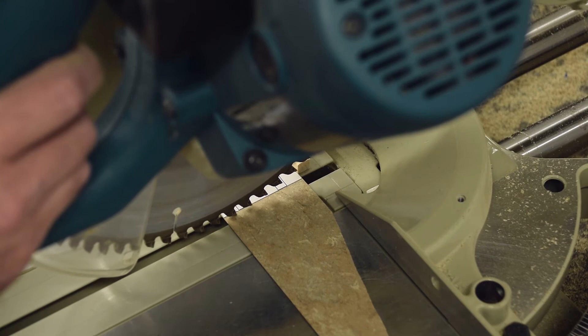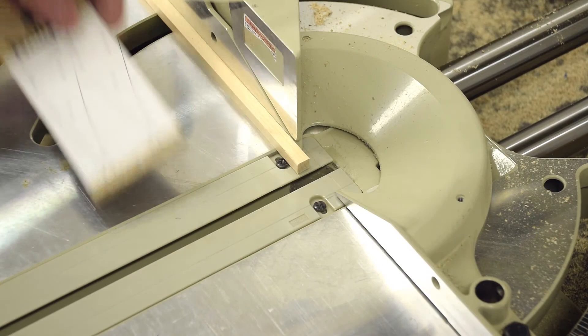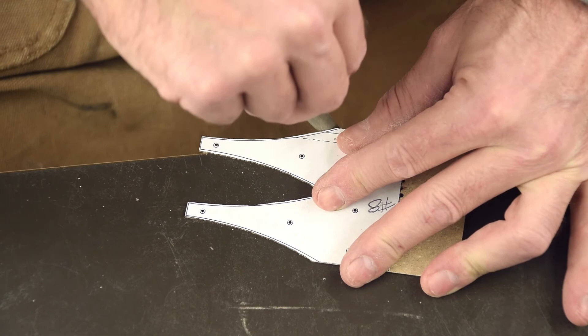For the swallowtail finger template, you'll need something that's thin but rigid. Some people like to use metal, but I've found that high pressure laminate, like Formica, can still be worked with hand tools and is durable enough to last for years. A combination of drilling, cutting on the bandsaw, and filing to the line completes the swallowtail finger template.